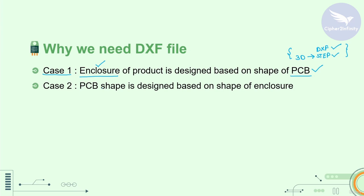The second case is where the PCB shape is designed based on the shape of the enclosure. Here the enclosure already exists, and the mechanical design engineer shares a DXF file with the PCB design engineer. Based on the information in that DXF file — such as fixed connector positions — the PCB design engineer places the components accordingly.